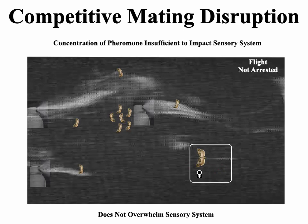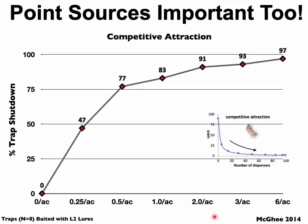The high emissions from aerosol emitters do not overwhelm the sensory system, so males can still fly — meaning point sources are important with competitive attraction just as with hand-applied dispensers. Data from Peter's PhD shows that one emitter every four acres gives about 50% trap shutdown; one every two acres gives 77%; and adding one, two, three, or four emitters per acre produces a curve of increasing efficacy. This is not unlike the same curve for hand-applied dispensers, just shown inversely. Point sources are important because competitive attraction is how aerosols work.